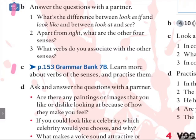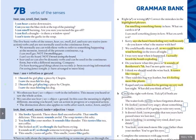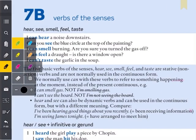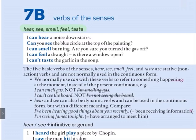Now let's go to our grammar bank to learn more about the verbs of the senses. The first group are: hear, see, smell, feel and taste — these are the five basic verbs. Examples: I can hear a noise downstairs. Can you see the blue circle at the top of the painting? I can smell burning — are you sure you turned off the gas? I can feel a draught — careful of the pronunciation: 'draught'. Is there a window open? I can't taste the garlic in this soup.